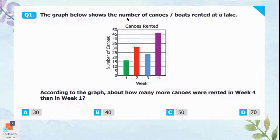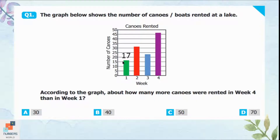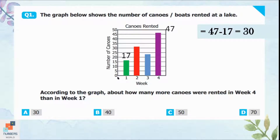Question 1: The graph below shows the number of canoes rented at a lake. About how many more canoes were rented in week 4 than in week 1? The bar of week 1 is ending after 15, so the estimated number is 17. The bar of week 4 is ending after 45, so the number is 47. Subtracting: 47 minus 17 equals 30. So 30 more canoes were rented in week 4 than in week 1 — option A.